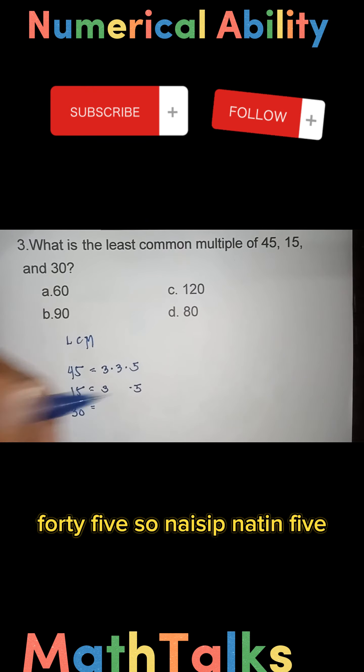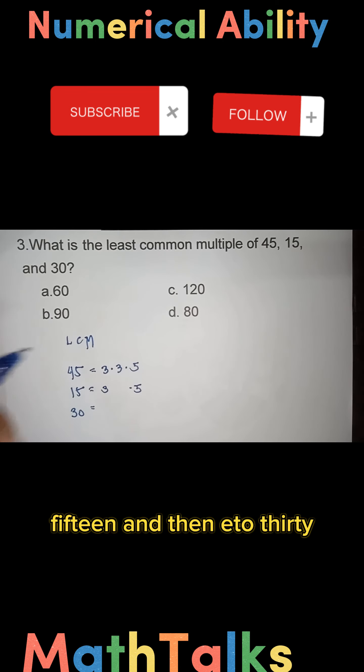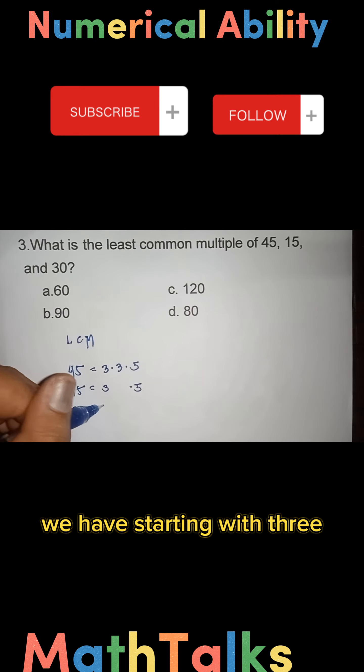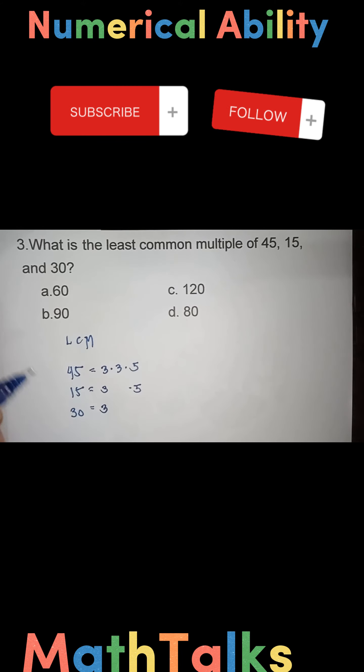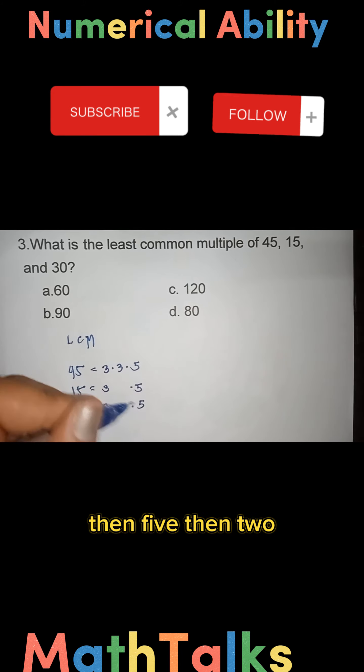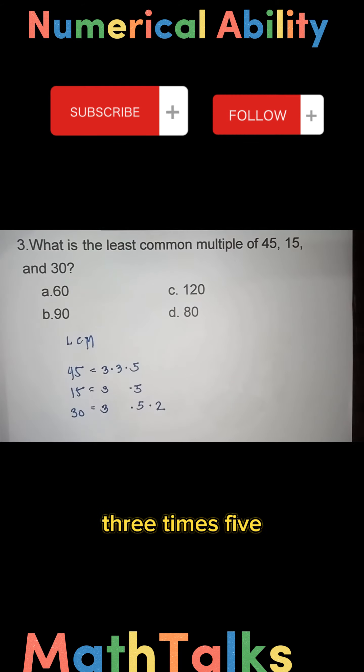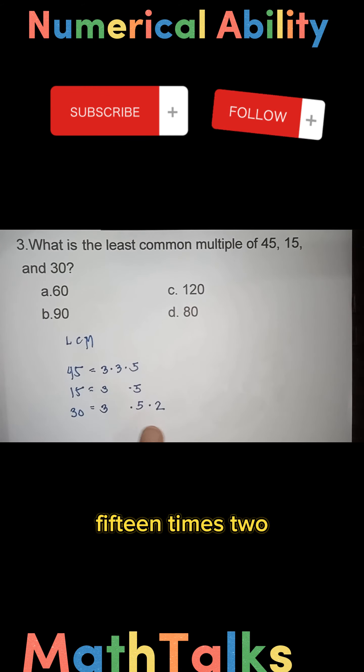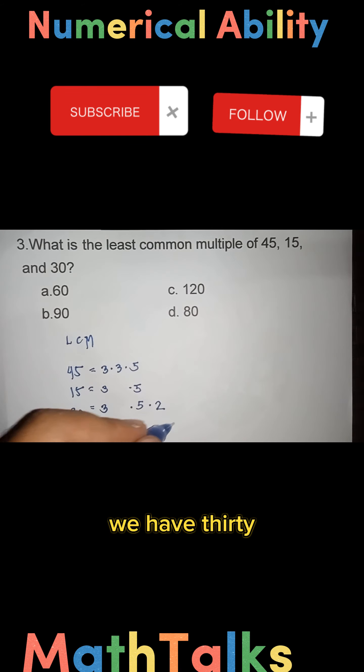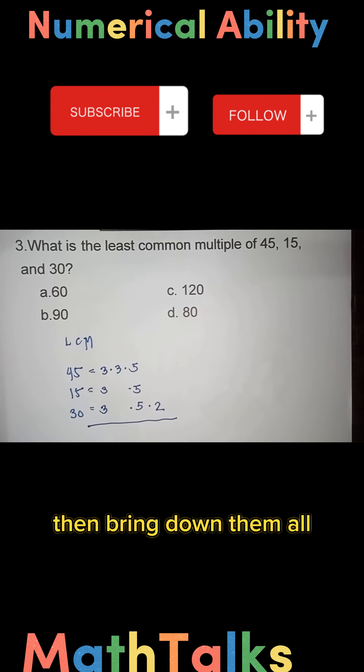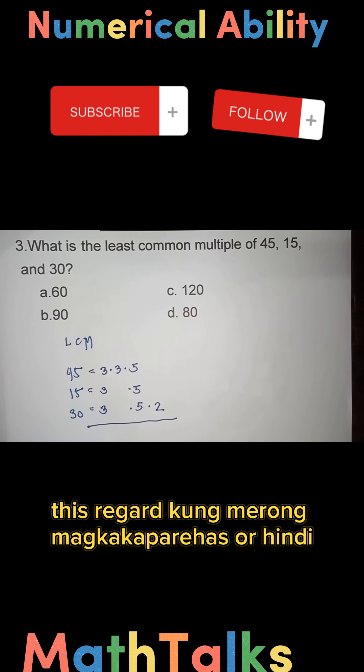Then for 30, we start with three, then five, then two. Three times five is 15, times two we have 30. Then bring down all the factors. Disregard if there are duplicates because the rule is different from the greatest common factor.